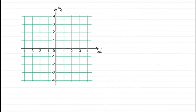Welcome to this tutorial on unit vectors. First of all, what is a unit vector? Well, we've met them before when we've had the vectors i and j. They're unit vectors because the length of them is clearly just one unit.